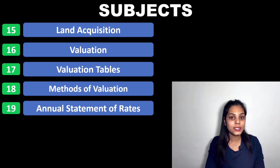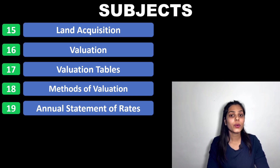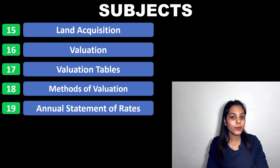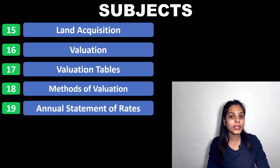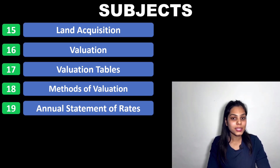The last topic is annual statement of rates, which includes the DSR. You have also studied DSR previously, so it will be easy for you. Now you have a clear picture of what you have to study — all the subjects and all the topics. We will now talk about how many days should be given to each subject, because it is very important to make a study plan.